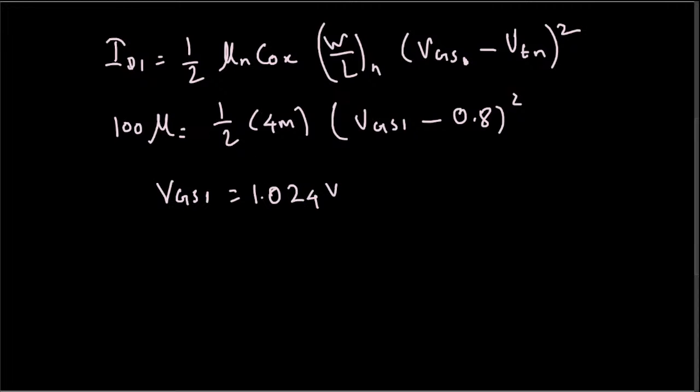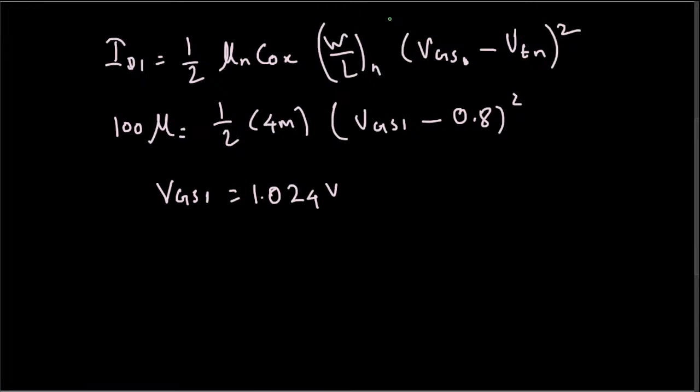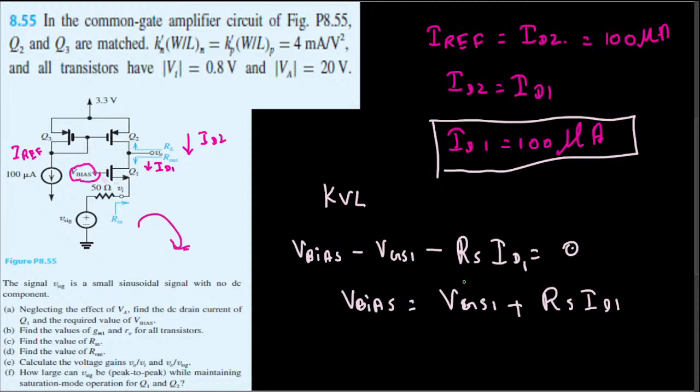Now once you have V_GS1, our main purpose is to find V_bias. We didn't know V_GS1; now we calculated V_GS1. That's 1.024 plus, putting it in this equation: 1.024 plus R_S is the source resistance, that is 50 ohm resistance, times I_D1, that's 100 microamperes. And if you calculate this one, you are going to end up getting 1.029 volts, and that's the V_bias voltage.